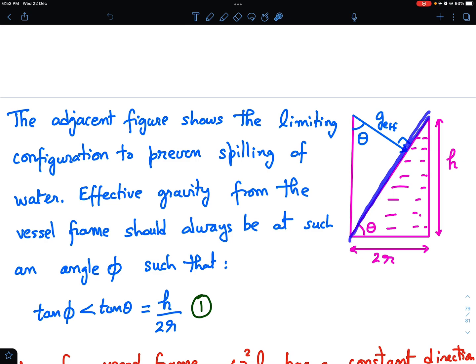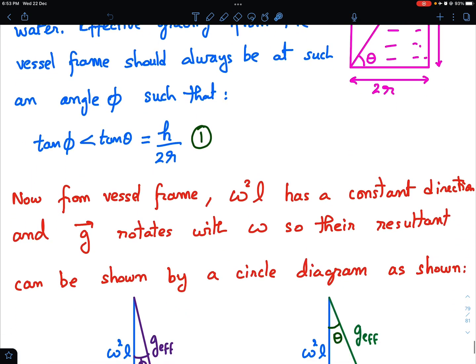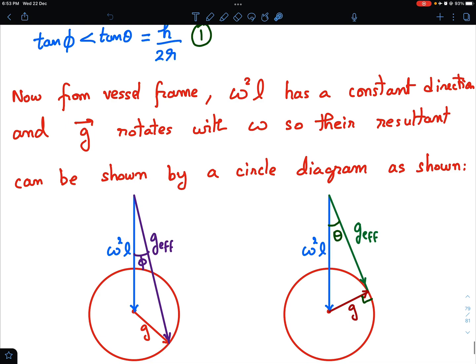The maximum allowable angle that the surface can make with the horizontal should also be the maximum allowable angle that G effective can make with this vertical wall of the vessel. It is not really vertical, but from the frame that I am seeing, the vessel frame, this appears to be vertical. This is also the maximum angle that the effective gravity vector can make with the wall of the vessel.